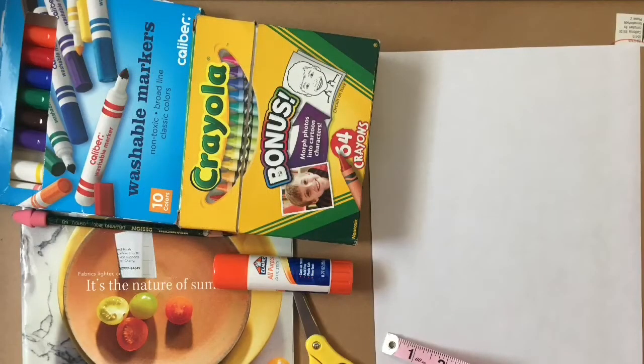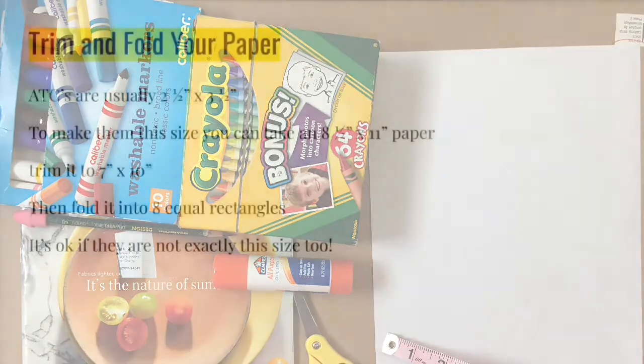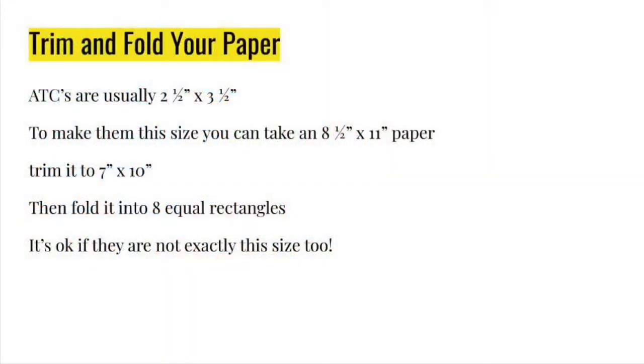Once you have your materials ready you're going to get the paper and make it the right size. So what I'm going to do is trim the paper first and then fold it. If you just fold the paper a few times, hamburger style, fold it three times and it should give you eight rectangles. They're equal rectangles that way. And if you trim it first to 7 by 10 they're going to be exactly two and a half by three and a half. It's okay if they're not exactly that size. So you can use this first step to trim or not.